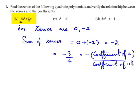So we can conclude that the sum of zeros is related to the coefficients as minus the coefficient of u divided by the coefficient of u².